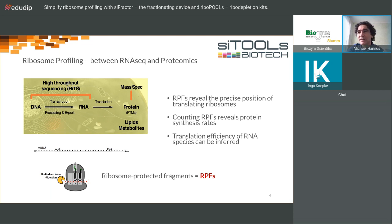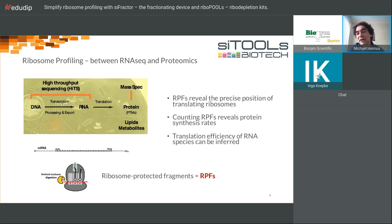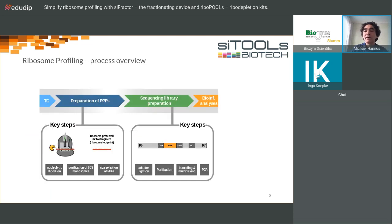What you do in ribosome profiling is not sequence mRNAs as in standard RNA-seq, but sequence only those parts of the mRNA that are protected inside a ribosome — those currently being translated. Please keep the abbreviation RPF in mind: a ribosome protected fragment, those ~30 bases inside a ribosome. If you could quantify those RPFs, you could know which mRNAs are actively translated and how efficiently they are being translated — a whole different level of information.